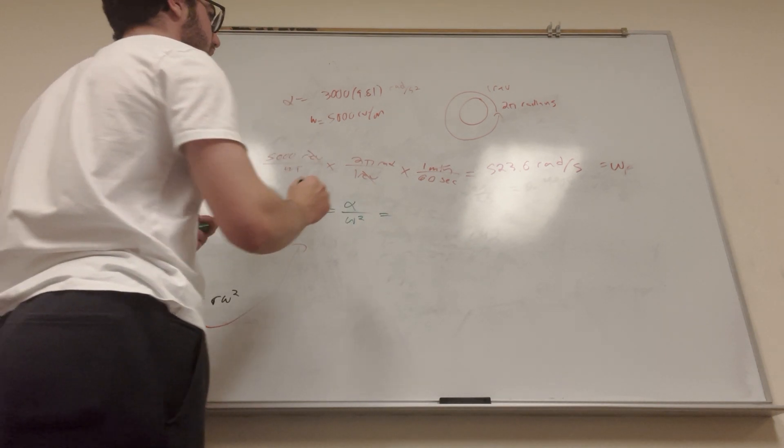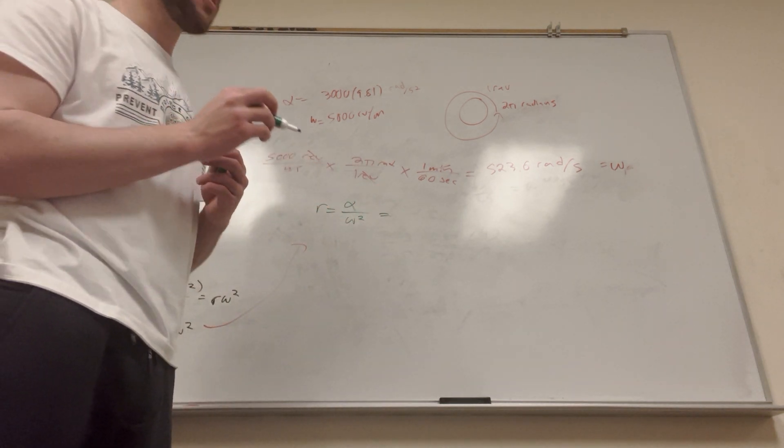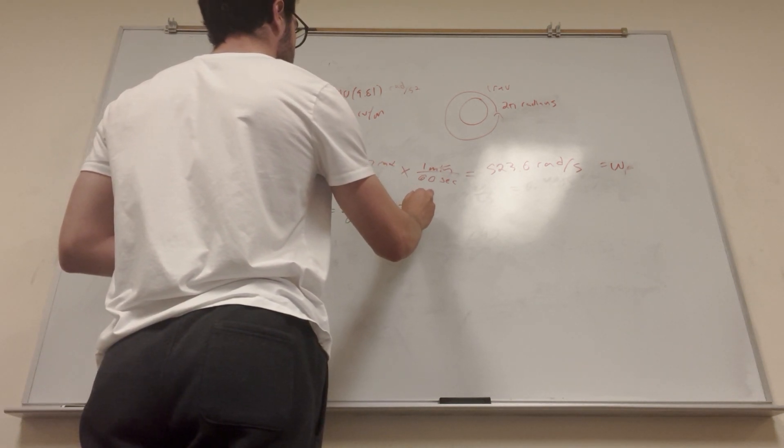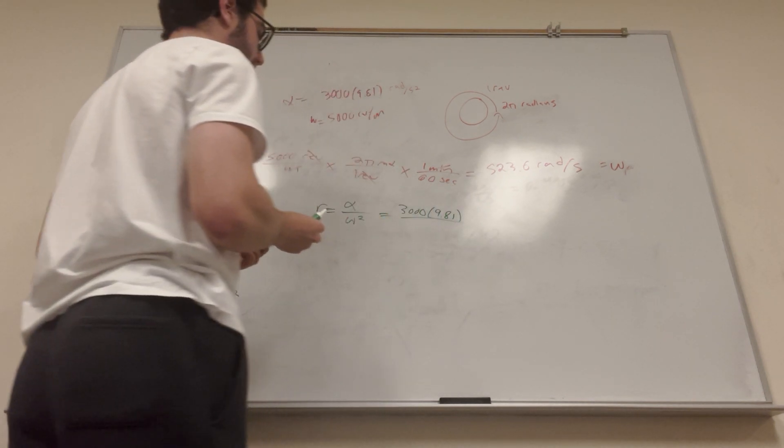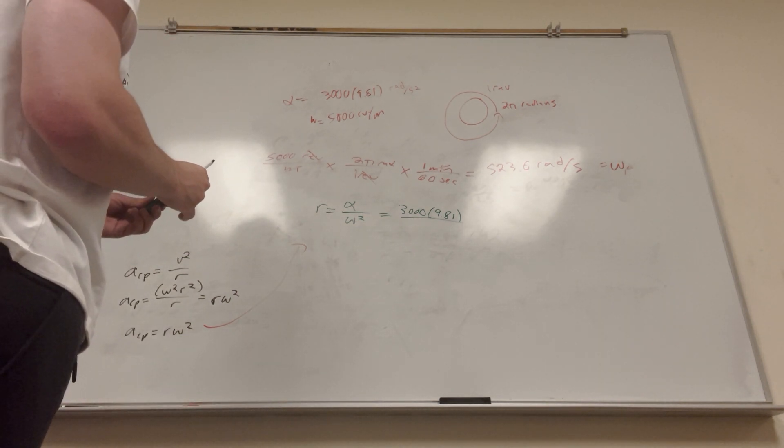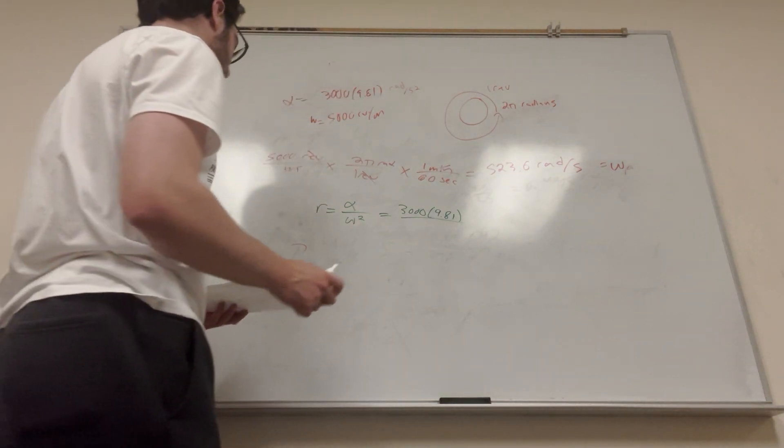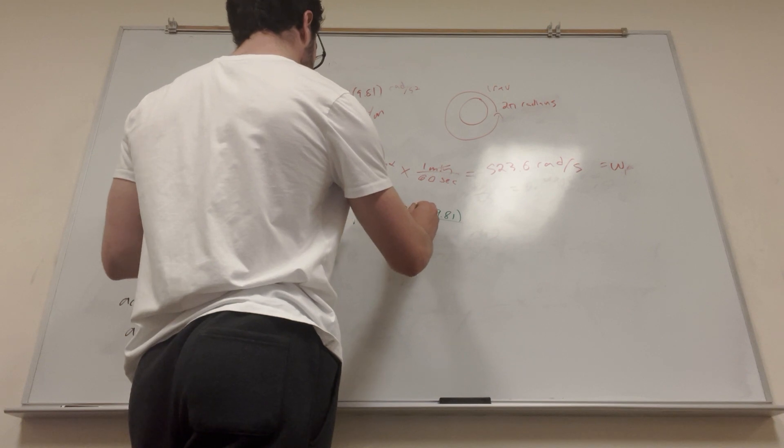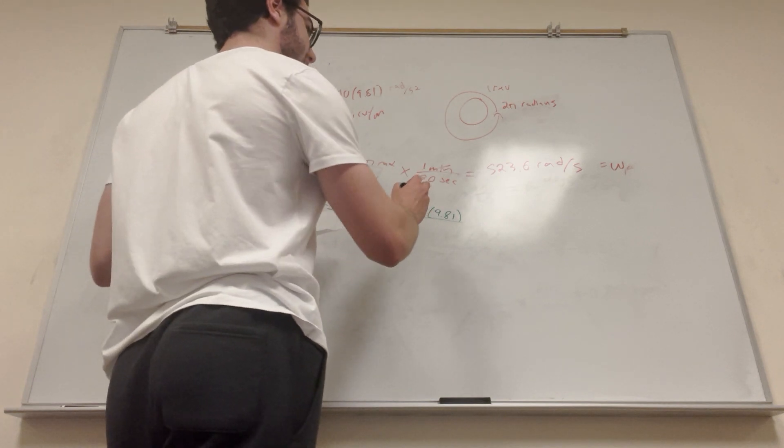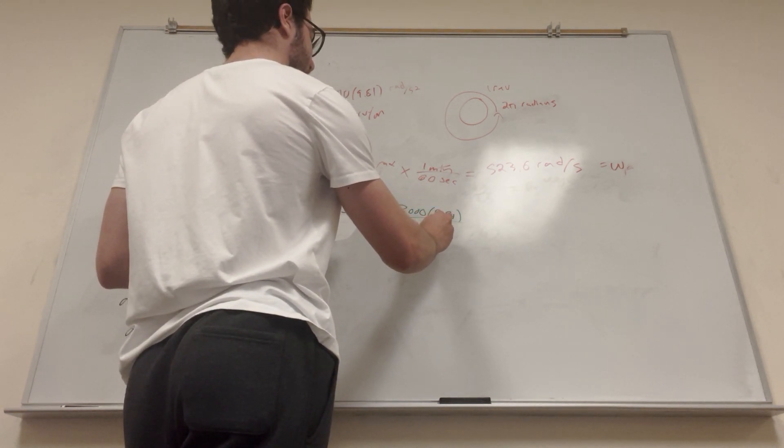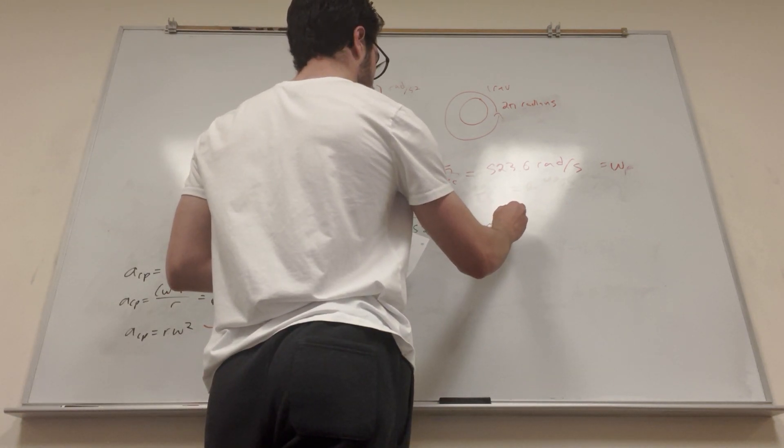So plug in our values. It's 3,000 times 9.81, and then divide that by... of course it's squared. So then it's 523.6 squared. And if you calculate this out, you're going to get the radius is 0.11 meters.